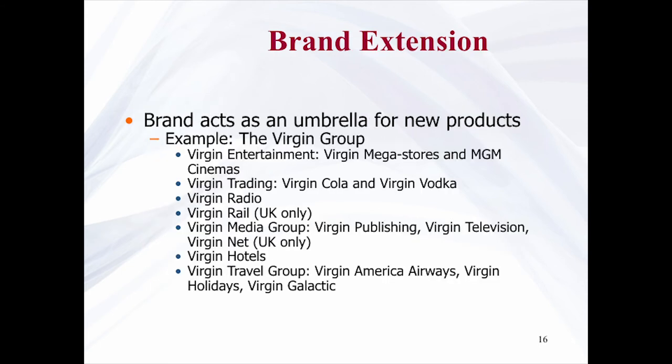Brand extension allows a brand to act as an umbrella for new products, for example the Virgin Group. The brand was built on Richard Branson's ability to exploit weaknesses in competitors' customer service skills and a flair for self-promotion. Branson's business philosophy is that brands are built around reputation, quality, innovation, and price rather than image. Although Branson is intent on establishing Virgin as the British brand of the new millennium, some industry observers wonder if the brand has been spread too thin.